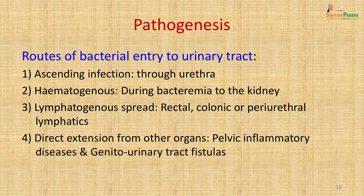Bacteria enter the urinary tract by various routes: ascending infection through the urethra, bloodstream infection via bacteremia directly to the kidney, lymphatic spread from rectal, colonic or periurethral lymphatics, or direct extension from nearby organs via pelvic inflammatory disease or genitourinary fistula. The ascending route and the hematogenous route are the two most common causes. Staphylococcus aureus more commonly enters the kidney through a bloodstream infection.